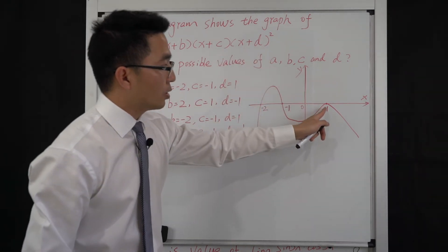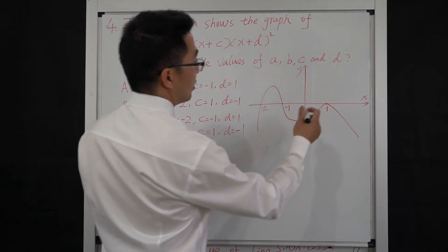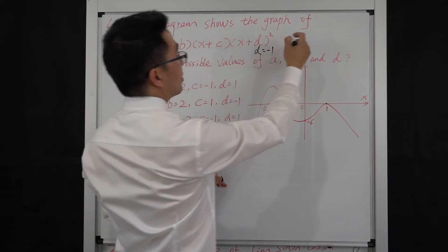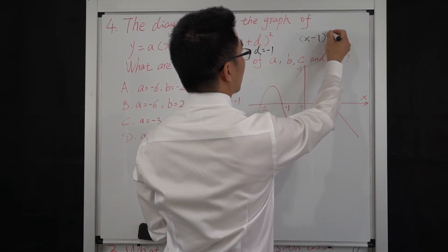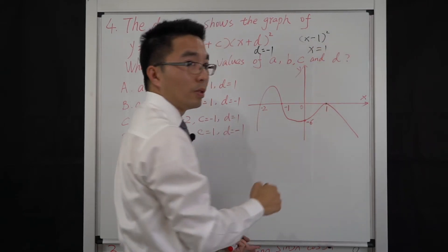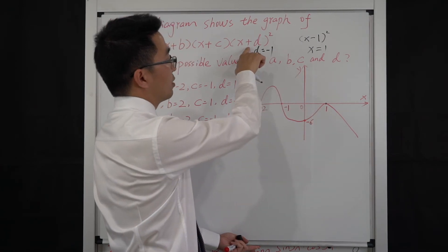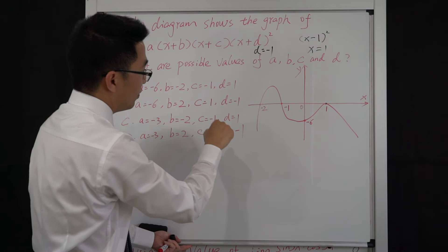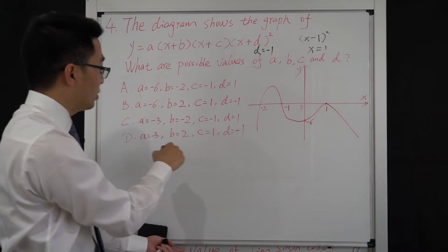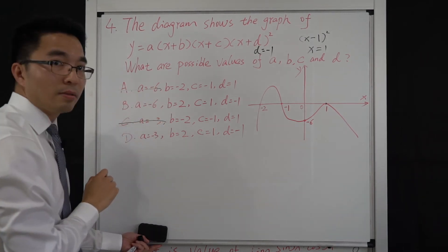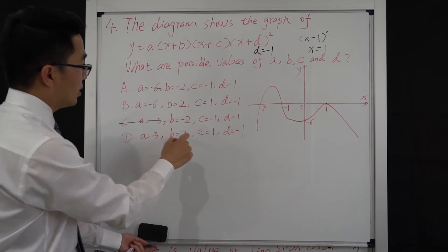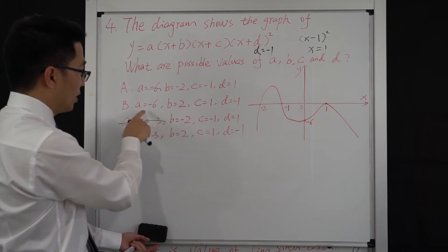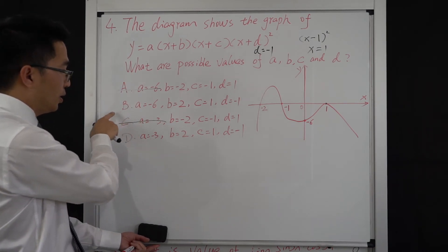Because d is a double root, we can confirm d corresponds to the point at x = 1. Since we have (x + d)², for the zero to be at x = 1 we need d = −1. Looking at the four answer options, if d must equal −1, only options B and D are possible answers. We can eliminate A and C. Since b and c are the same in both B and D, we focus on the value of a, which is the only difference.